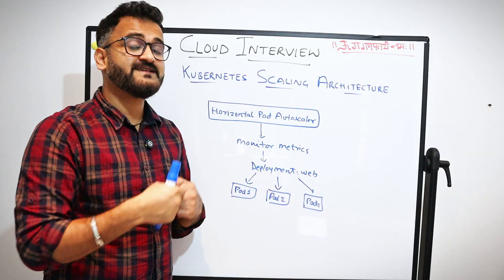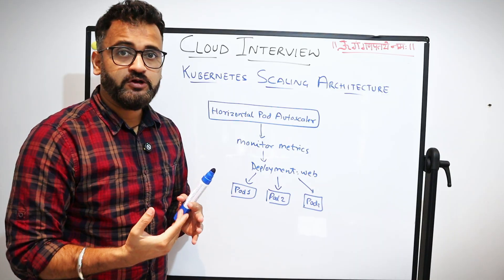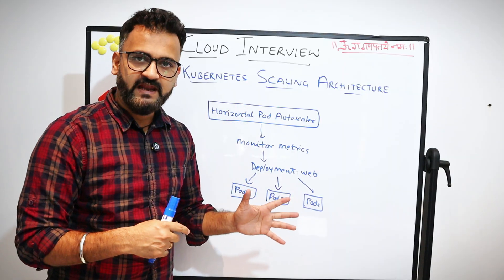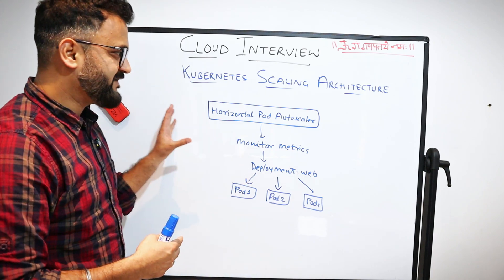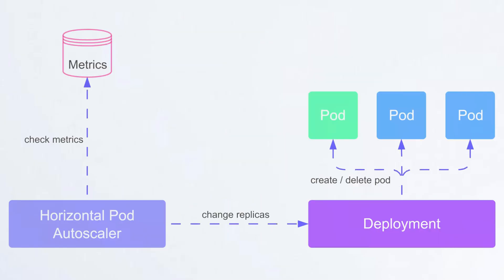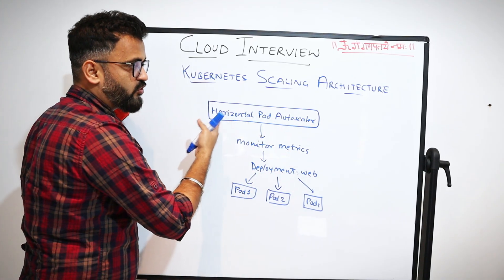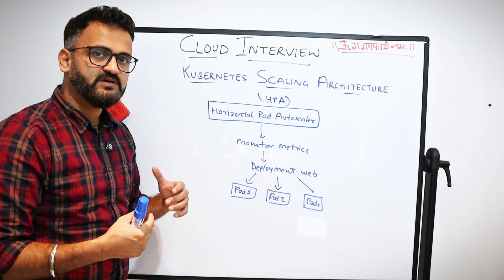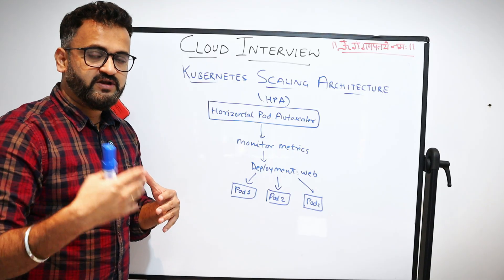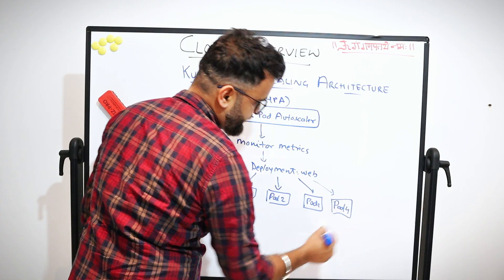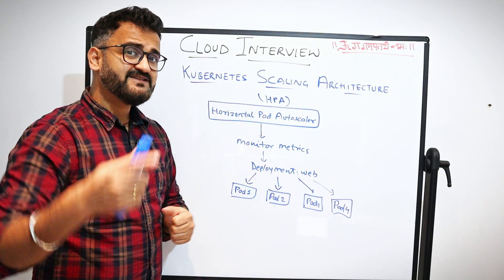Now for the most advanced part — Kubernetes scaling architecture. In Kubernetes, you have clusters, within those clusters you have nodes, and within nodes you have pods. One pod runs one instance of your container image. The core concept is the Horizontal Pod Autoscaler (HPA), which monitors metrics like memory or CPU. When a pod exceeds a memory threshold, HPA spins up another pod — similar in concept to what we discussed before.